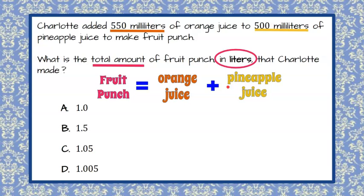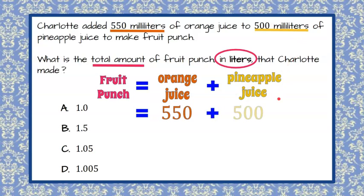Let's go up to our problem now that we can visually understand what we're doing. Orange juice is 550 milliliters, and we're adding to that 500 milliliters of pineapple juice — two different quantities. Reminding you, the key word in bold was liters.